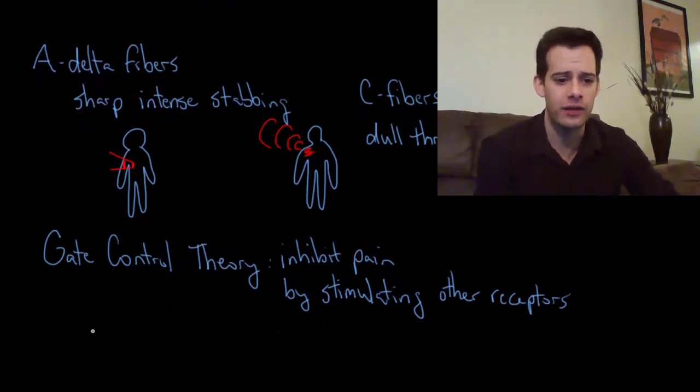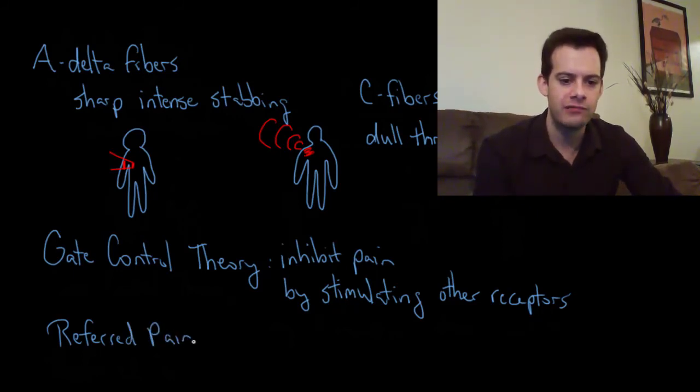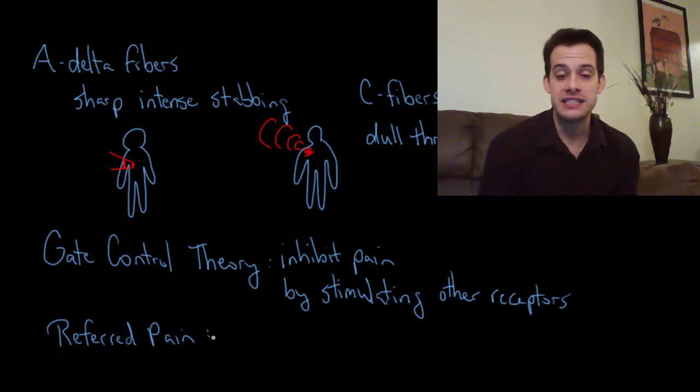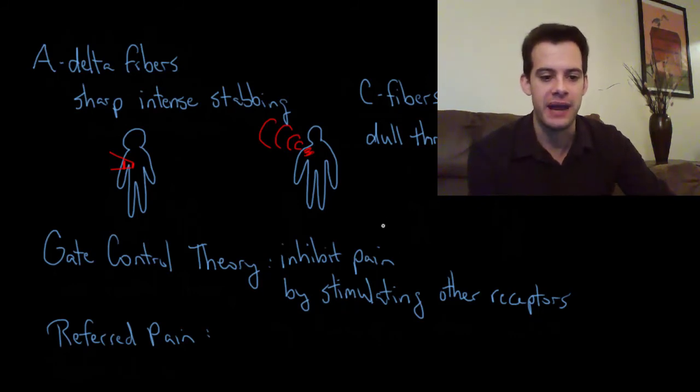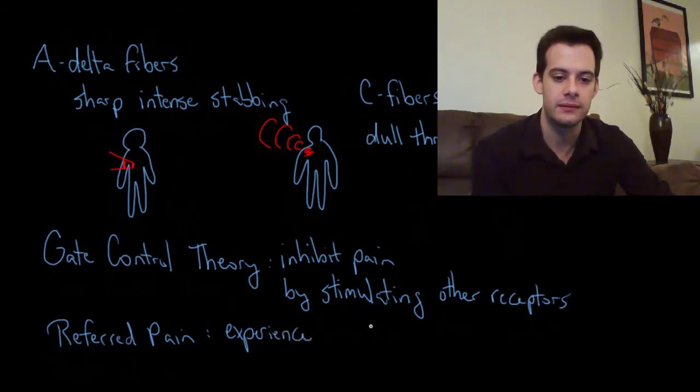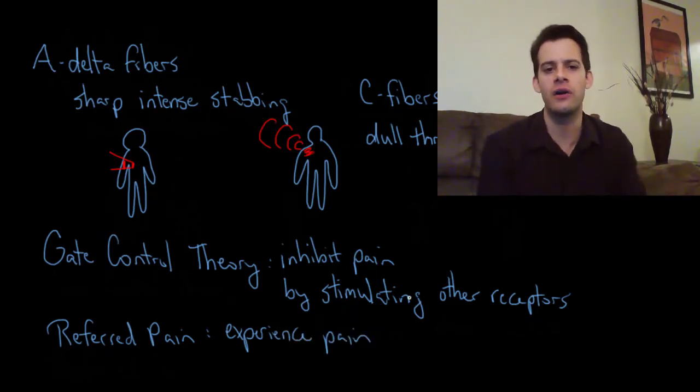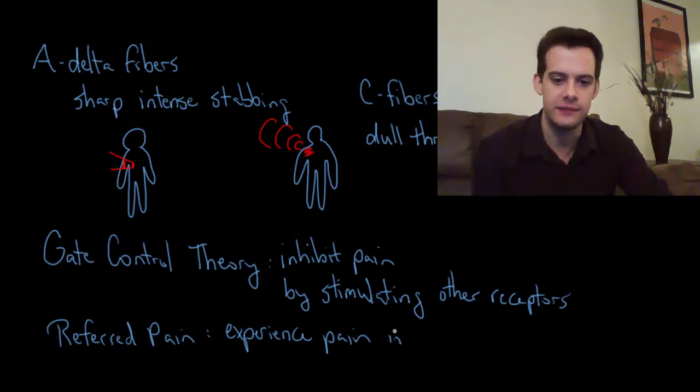A final theory related to pain is the idea of referred pain. The idea of referred pain is that these receptors all have to get to the spinal cord. There are some places where they kind of overlap. There can be a little bit of confusion about where a pain message is coming from. So the idea of referred pain is that the experience of pain can occur in places where it's actually not where the pain is coming from. Experience pain in other areas, meaning in areas where the pain is not originating from.